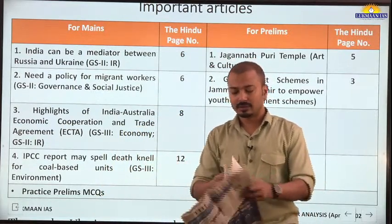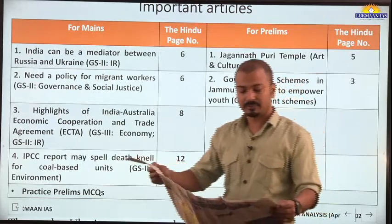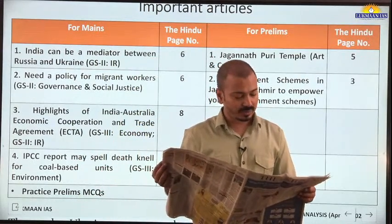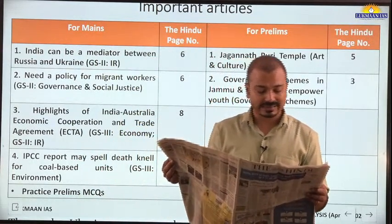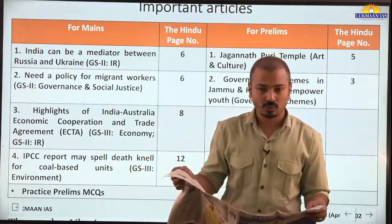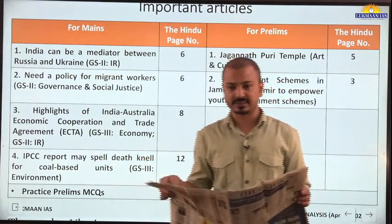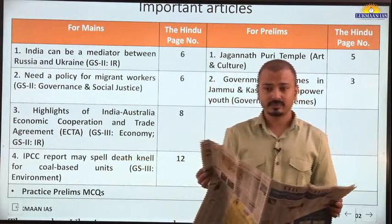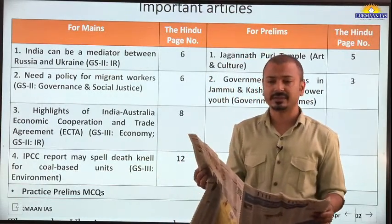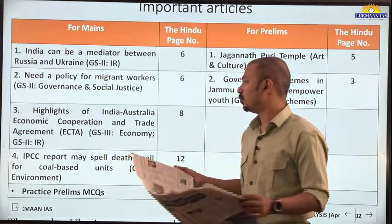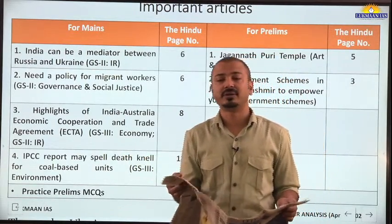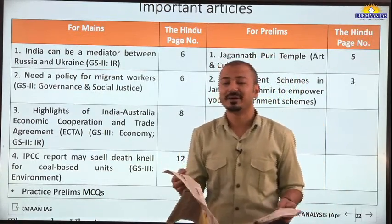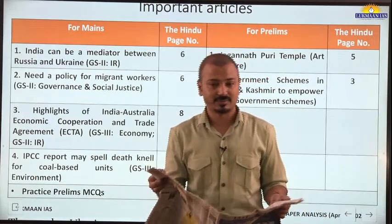On page 12 - IPCC report may spell death knell for coal-based units. This particular report is the third installment of the overall Sixth Assessment Report (AR6). In total, four reports will form AR6; already two have been released and this is the third. The scientists' consortium in this report highlights that India is largely dependent on coal-fired thermal power plants, and they are talking about completely shutting down all such coal-fired power plants by 2050.